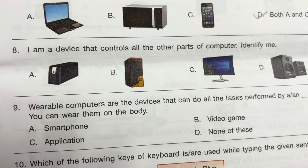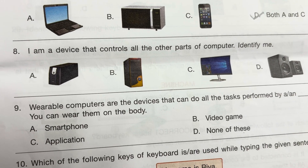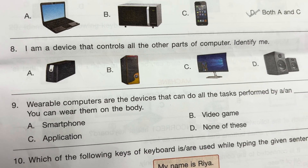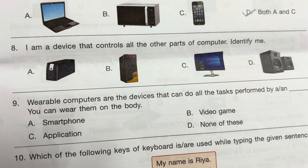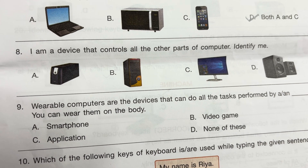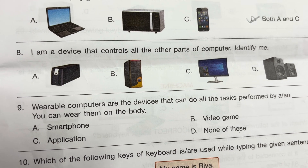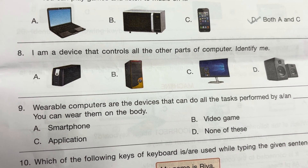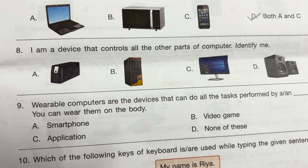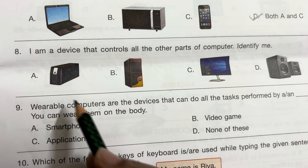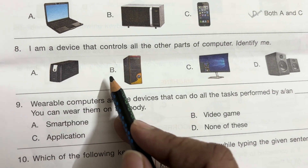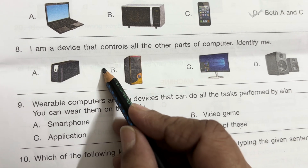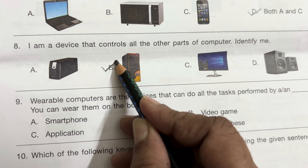Question 8: I am a device that controls all the other parts of the computer — identify me. CPU controls all the other parts of the computer. Option A is UPS, option B is CPU. So answer is B — CPU.